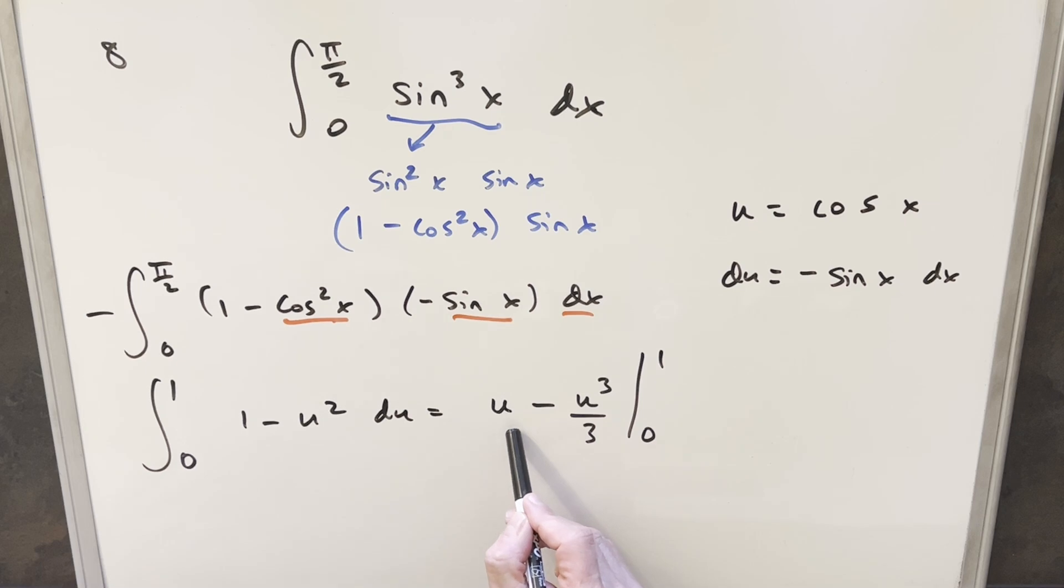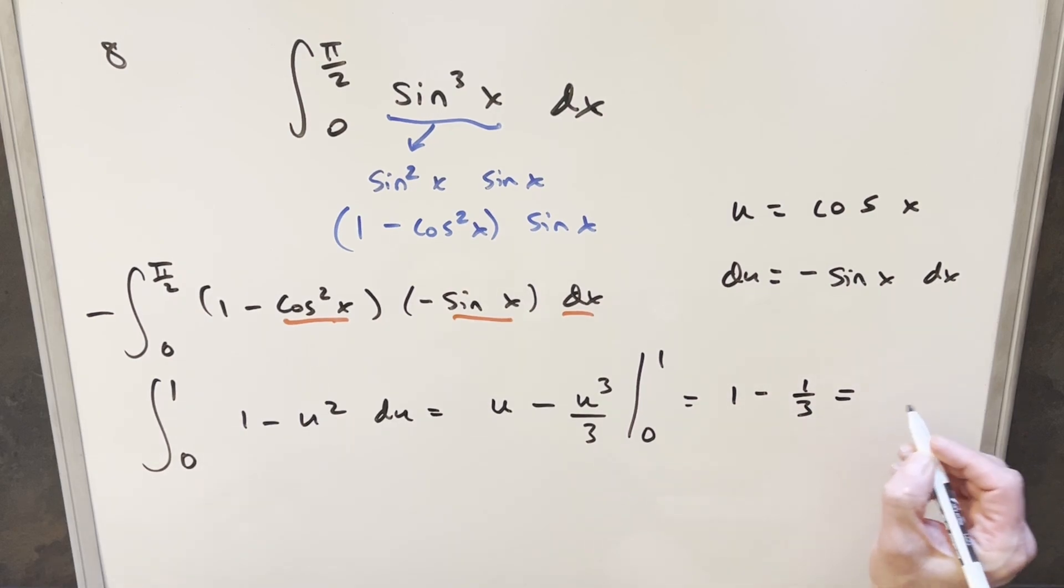Everything at 0 is 0, so we plug in 1. We get 1 - 1³/3, which is 1 - 1/3, giving a final solution of 2/3.